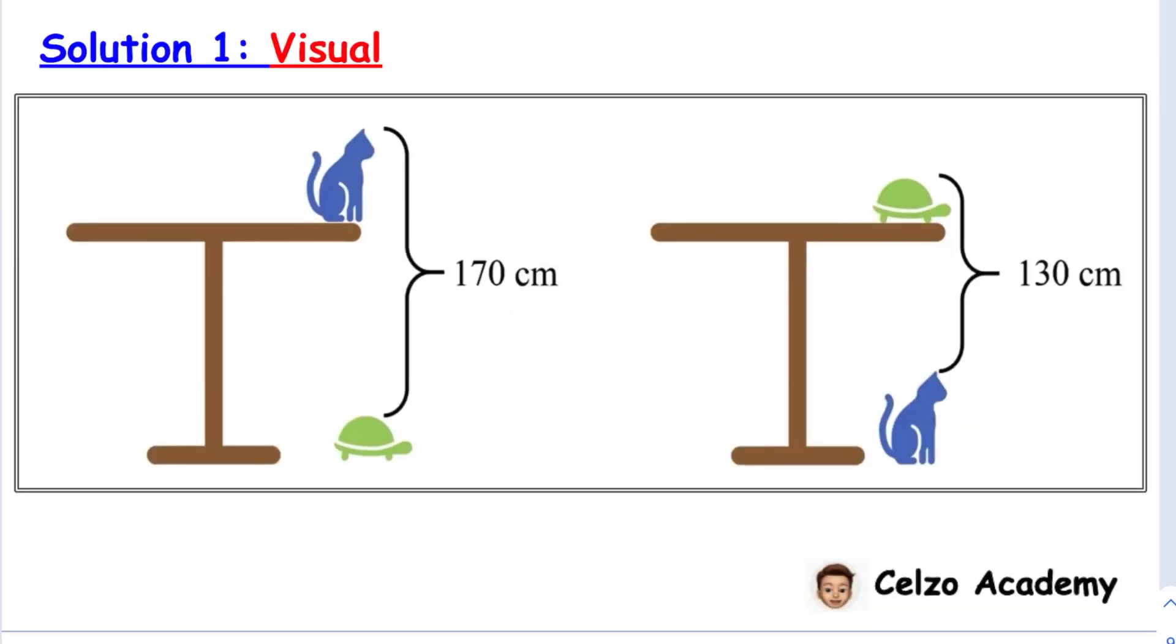One way to solve this problem is through visualization. A creative way of solving this problem is putting the first table on top of the second table, and I'd like you to notice what will happen to the turtles.